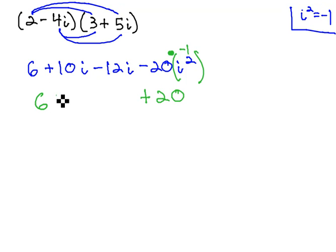So the entire expression reads 6 plus 10i, minus 12i, now plus 20. Because i squared is negative 1, changing the sign on the 20.